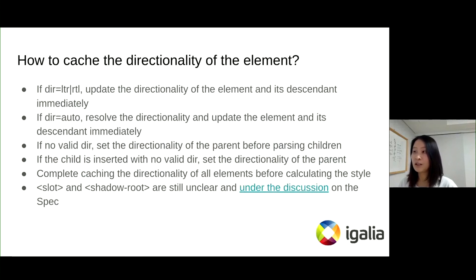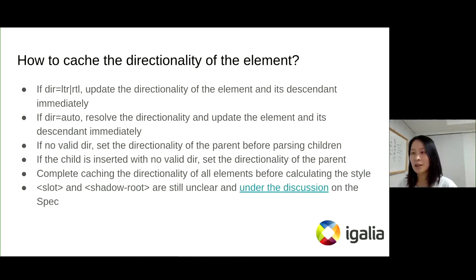How to cache the directionality of the element? There is the rule: if the dir attribute has LTR or RTL, we update the directionality of the element and its descendants immediately. If the dir attribute has auto, we resolve the directionality and update the element and its descendants immediately. If the element has no valid value, we set the directionality of its parent to it before processing children.